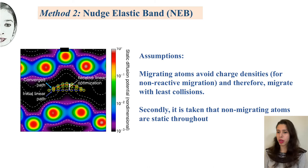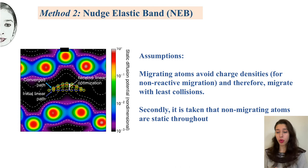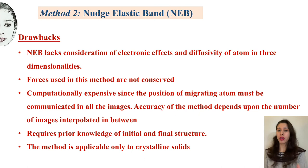Using NEB, the minimum energy path for atom diffusion is determined — the path which requires minimum energy for an atom to move from one place to another. However, this study is based upon two major assumptions. First, migrating atoms avoid charge densities and therefore migrate with least collisions. Second, non-migrating atoms are static throughout — meaning all atoms other than the diffusing atom in the system should be static. Therefore, this study is best suited for crystalline systems.